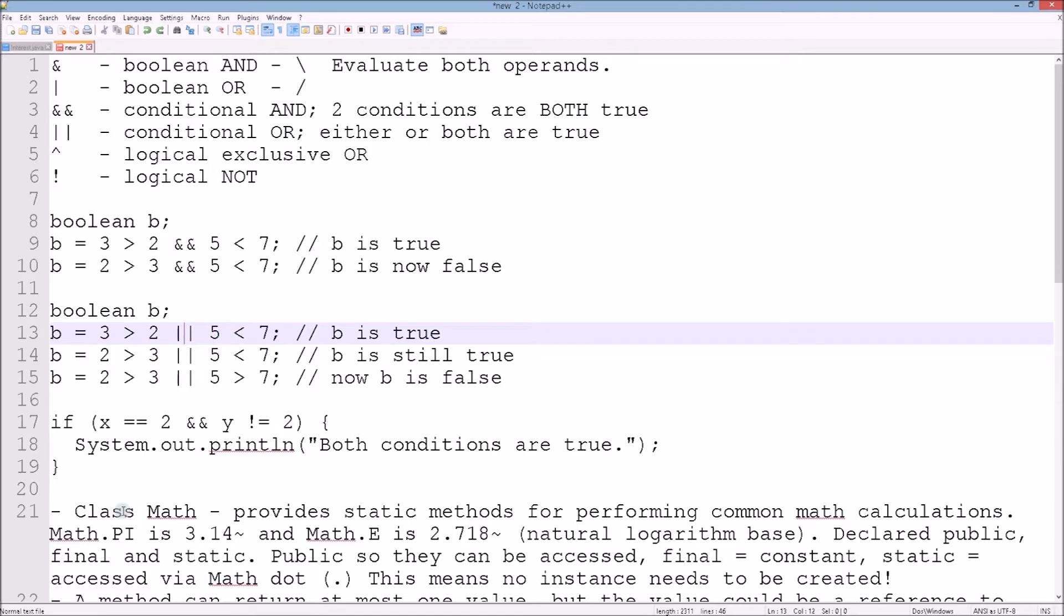Down here we have again the conditional AND operator. If x equals 2 and y does not equal 2, print out both conditions are true. Now let's think about the logical operators.